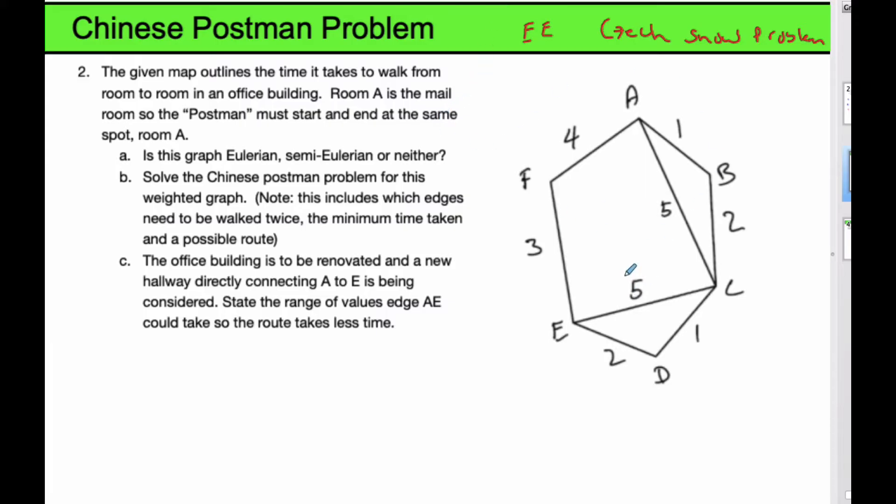We're given this particular map and it's the time it takes to walk from room to room in an office building. Room A is the mail room so the postman must start at A and he must also end at A. The first question is, is this graph Eulerian or semi-Eulerian or neither?